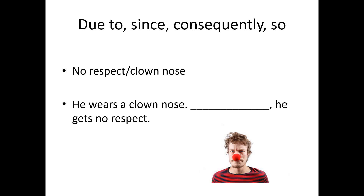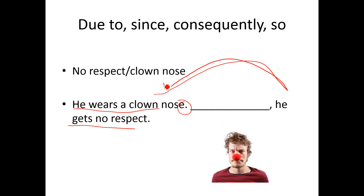He wears a clown nose. Period. [blank], comma, he gets no respect. In this situation I see the period, so I have a complete sentence and a complete sentence, and I want to show the relationship between the two sentences. So in that situation I'll use 'consequently.' He wears a clown nose, consequently, he gets no respect.